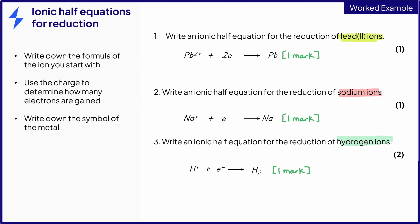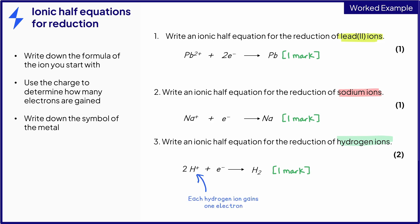There are 2 hydrogen atoms on the right-hand side, but only 1 hydrogen ion on the left-hand side, so a 2 needs to be placed in front of it to make it balanced. If there are 2 hydrogen ions and each one has gained 1 electron, then 2 electrons have been gained in total, so again this would need balancing in the equation.